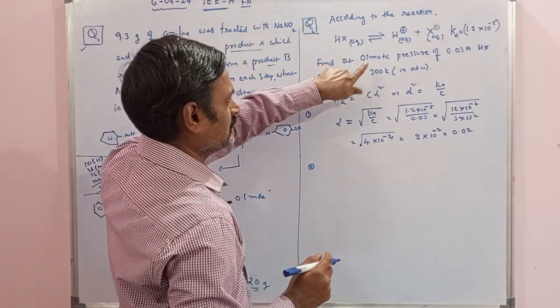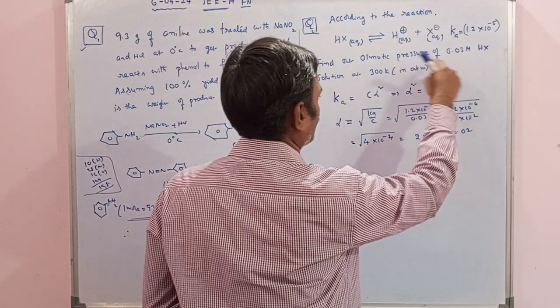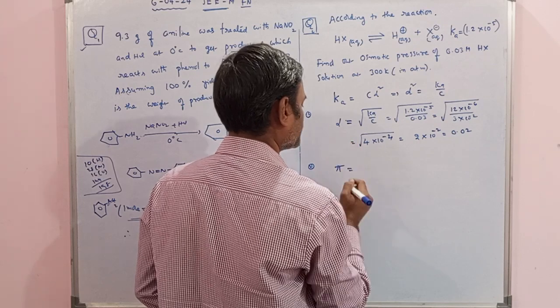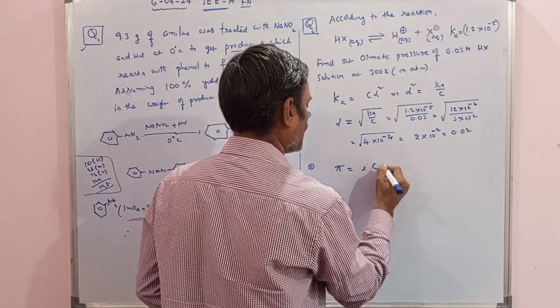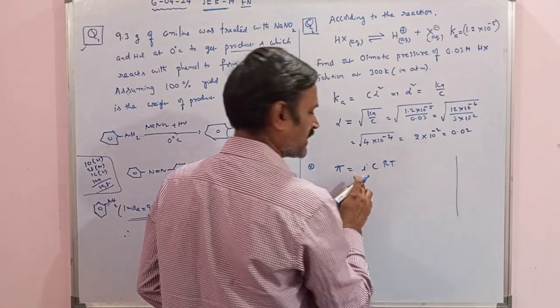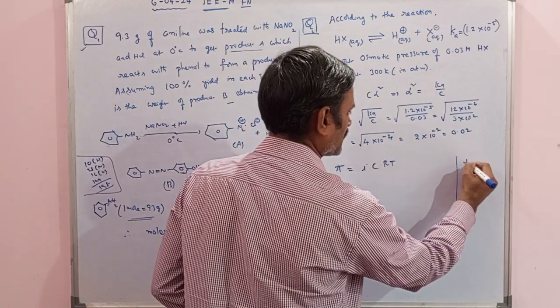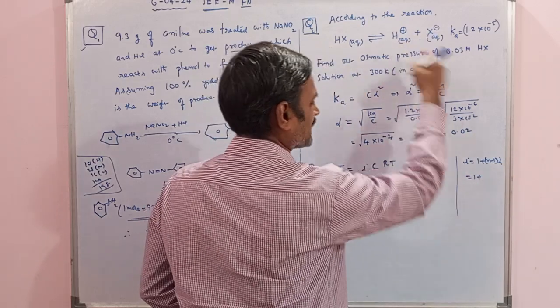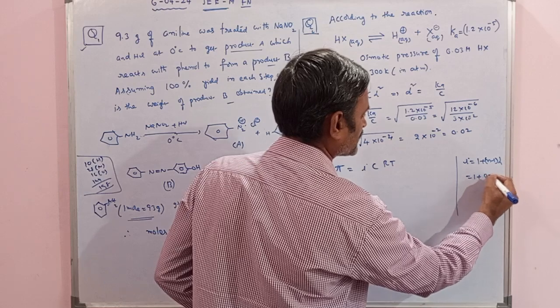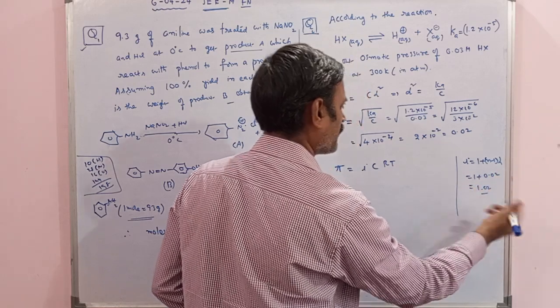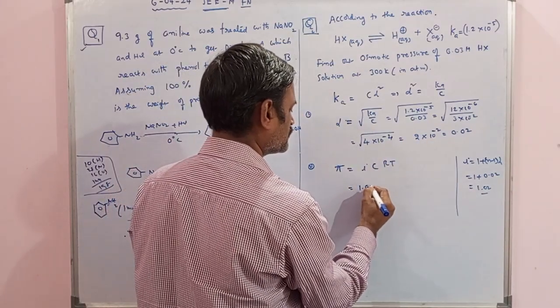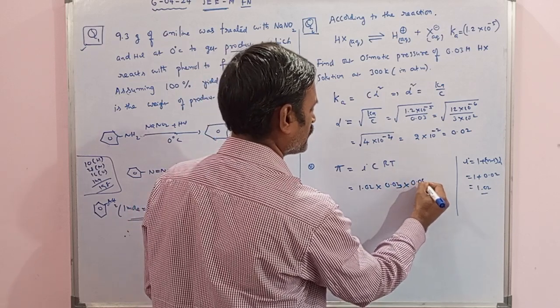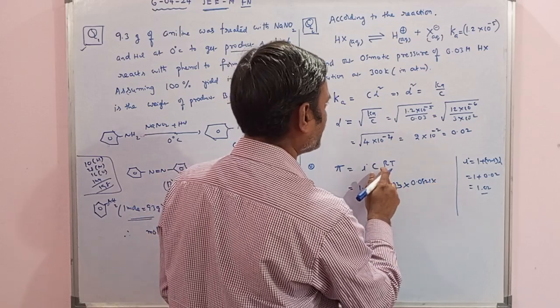Second step: they're asking about the colligative property determination, osmotic pressure of this solution at 300 Kelvin. What is the osmotic pressure formula when alpha is there? π equals iCRT. i is the van't Hoff factor because dissociation is happening. For dissociation, i equals 1 + (n-1)α. Here 2 particles are coming, so n is 2. That's 1 + (2-1)α, which is 1 + α. Alpha is 0.02, so approximately 1.02. Concentration given is 0.03, R value is 0.0821, and temperature is 300.